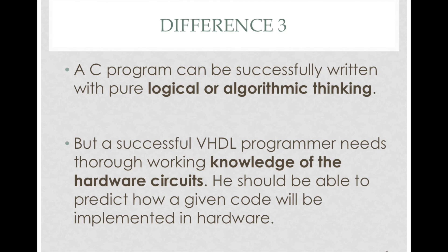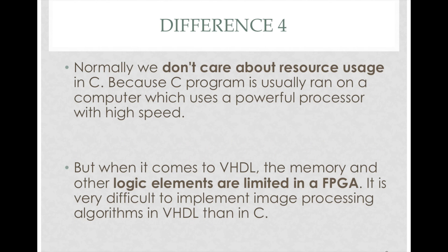A C program can be successfully written with pure logic or algorithmic thinking. But a successful VHDL programmer needs thorough working knowledge of hardware circuits — he should be able to predict how a given code will be implemented in hardware. Normally we don't care about resource usage in C, since C programs run on computers with high processing power. But in VHDL, memory and other logic elements are limited in an FPGA, making it very difficult to implement image processing algorithms compared to C.